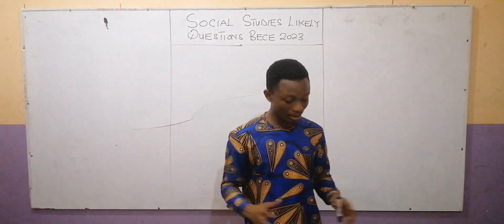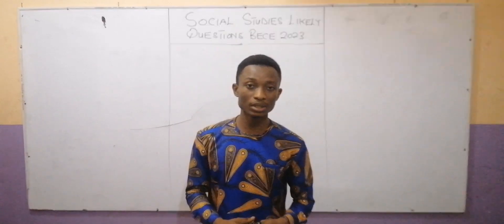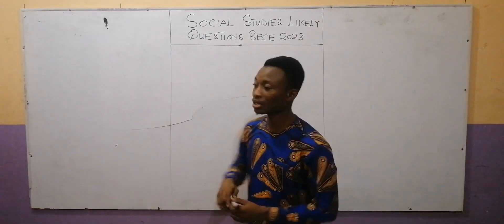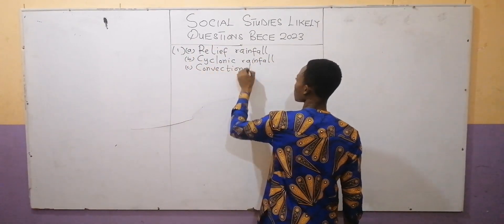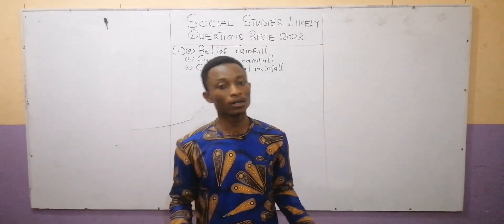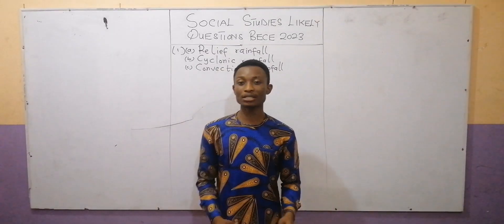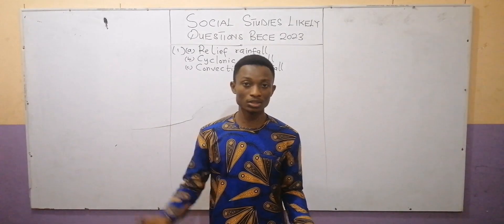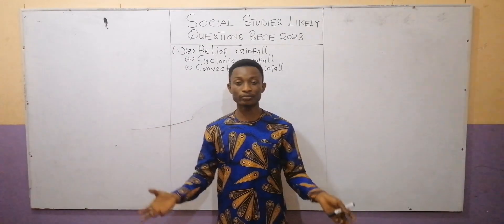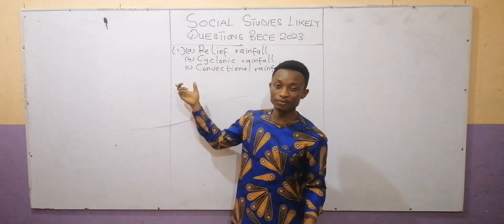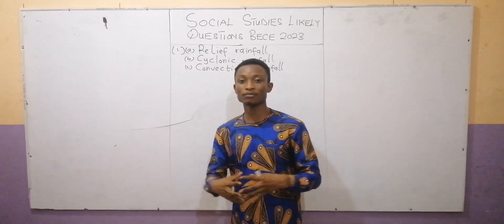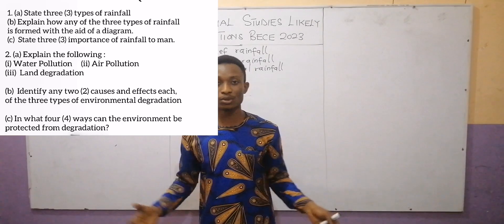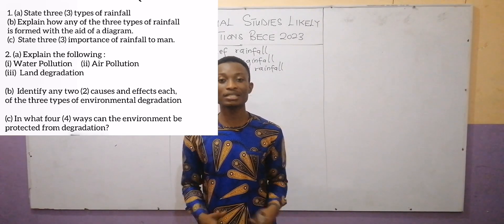The first question says: state the three types of rainfall. We know that there are three types of rainfall — that is relief rainfall, cyclonic rainfall, and convectional rainfall. These are the three main types. Now, what is rainfall? Rainfall is the release of condensed water vapor that has evaporated into the atmosphere, which is released as rain, snow, or sleet. There are three ways by which rainfall is formed: through relief features such as mountains, cyclonic — the meeting of two air masses — and convection, when warm air is forced to rise as a result of convection currents.